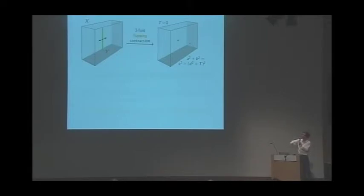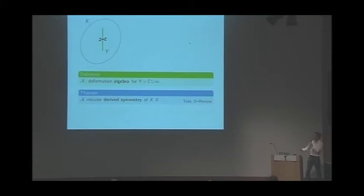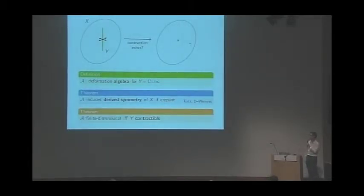It turns out that deformations like these determine contractibility. This is an example of a flopping contraction, which comes with a mirror symmetry prediction that the B model on X has an interesting symmetry. For any three-fold flopping contraction, a certain algebra A controls these deformations, and I showed that A induces a derived symmetry. We extended this to higher dimensions. Take any Riemann sphere in X; we want to ask whether a contraction exists. We proved that if A is finite dimensional, then and only then is this contractible. Thank you.